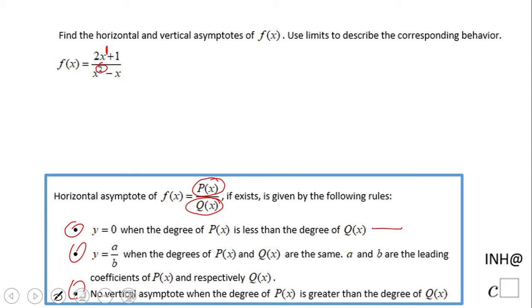We are in this case. The degree of P of x, which is one, is less than the degree of Q of x, which is two. So y equals zero is the horizontal asymptote. Pretty easy if you know these three choices.